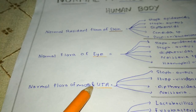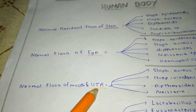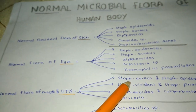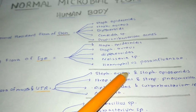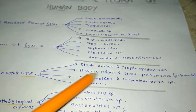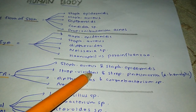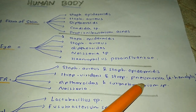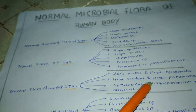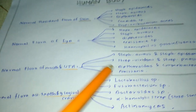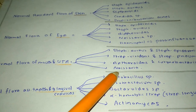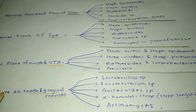The normal flora of the mouth and upper respiratory tract includes Staphylococcus aureus, Staphylococcus epidermidis, Streptococcus viridans, and Streptococcus pneumoniae — both alpha hemolytic organisms — as well as diphtherioids, Corynebacterium species, and Neisseria.